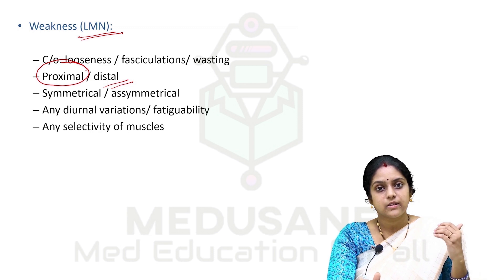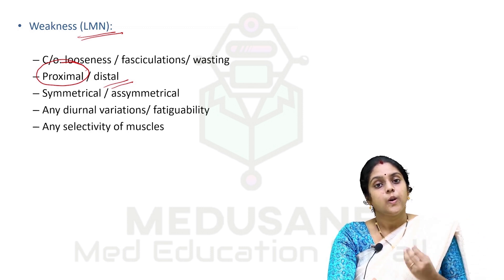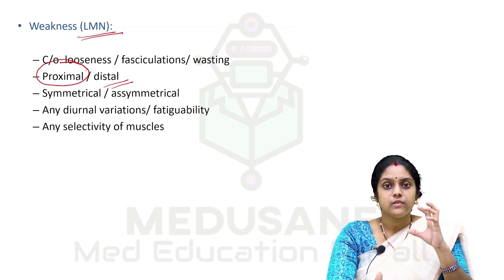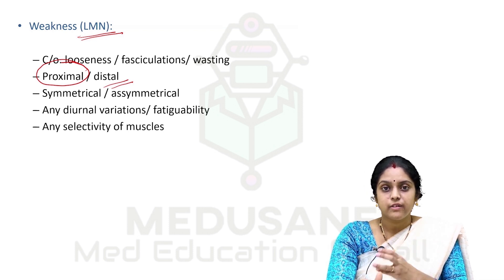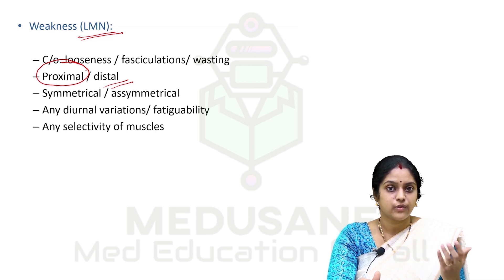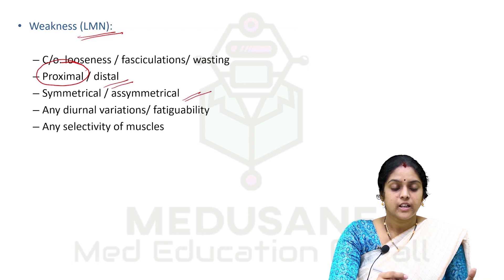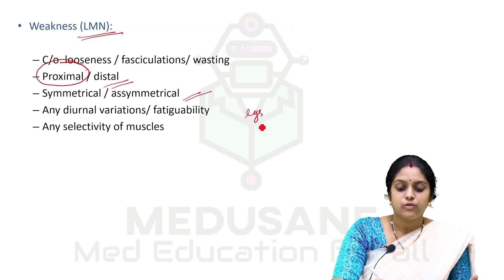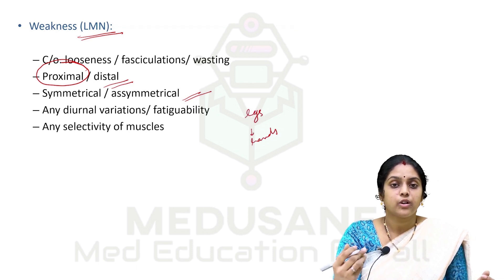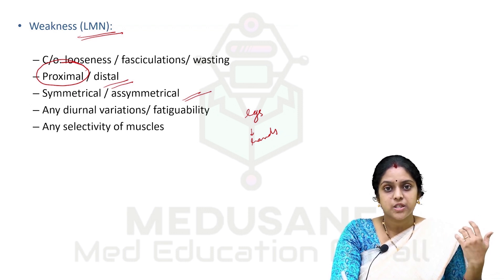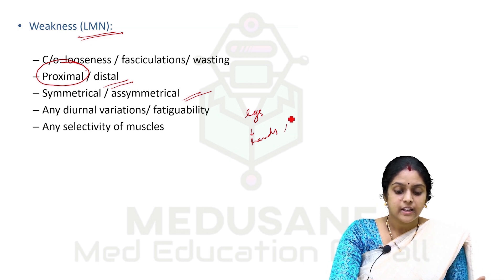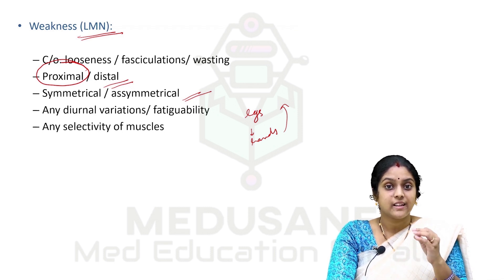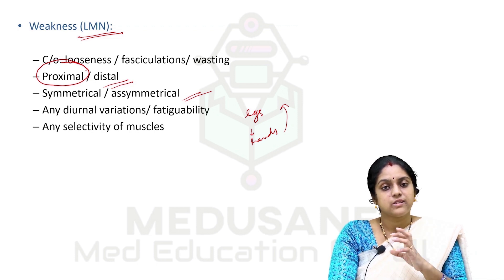When talking about weakness — whether upper or lower motor neuron — we need to keep in mind that the weakness can be symmetrical or asymmetrical. Symmetrical weakness is associated with certain kinds of diseases, and asymmetrical weakness with others. We also need to see if there is a particular order in which the weakness appeared. The patient might say weakness started from the legs and moved to the hands — that is ascending paralysis. Others might say it started from the hands and went to the legs — that is descending paralysis. Different disorders are associated with ascending and descending kinds of paralysis.